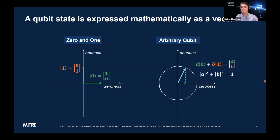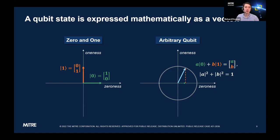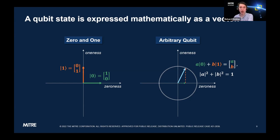A qubit is analog in a sense, though it's different from analog computing which uses classical electrical signals. The values are real numbers — actually complex numbers. The number of shades of zero-ness and one-ness available is limited only by the hardware's precision and the Heisenberg uncertainty principle. Whatever level of precision your instruments can produce, that's the level of precision you can achieve.